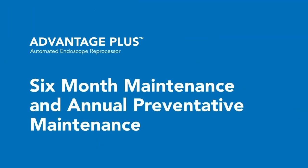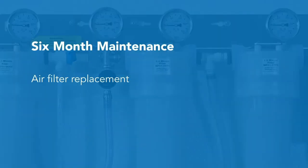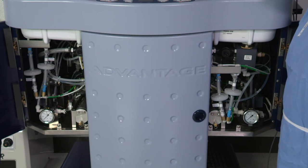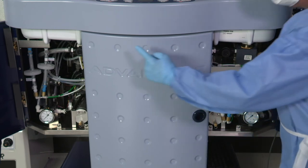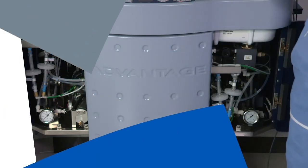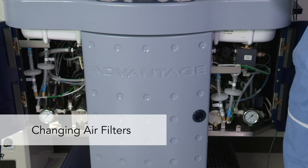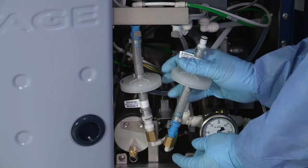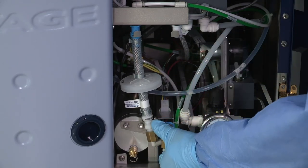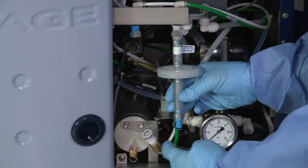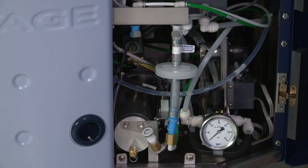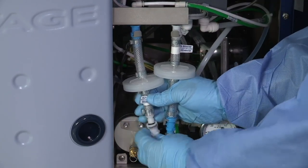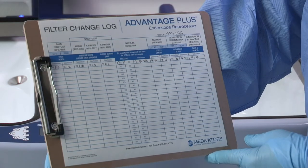Six-month maintenance tasks include replacing the air filters, water filters, and the charcoal filter in the vapor management system if purchased. The Advantage Plus Reprocessor contains four 0.2 micron air filters to prevent contaminants from reaching endoscope channels during air purges and channel monitoring. To access the air filters, open both outer doors, press down on the Quick Connect fittings to release the filter, remove and discard, and install a new air filter by attaching the Quick Connect fittings ensuring color-coded fittings match. Repeat until all four filters are replaced. Close the outer doors and record the filter change on a log.